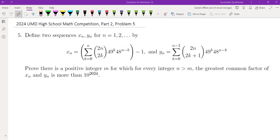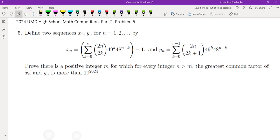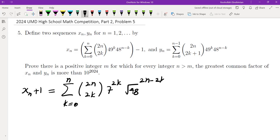Now looking at these two sequences, they do look like binomial expansions, except they're missing some terms. If you look at xn, moving the negative one to the other side gives me the sum of 2n choose 2k. If this were a binomial expansion, these would be only the even terms. I'm going to write this as 7 to the power of 2k and root 48 to the power of 2n minus 2k.